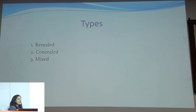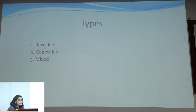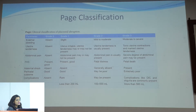Abruptio placentae is divided into three types: revealed type, concealed type, and mixed type. In the revealed type, the pervaginal bleeding is seen outside. In the concealed type, bleeding cannot be seen outside. In the mixed type, some bleeding is visible outside while some remains concealed inside the uterus. There is also a Page classification which was once used to classify abruptio placentae, though you should primarily know the more recent classification.